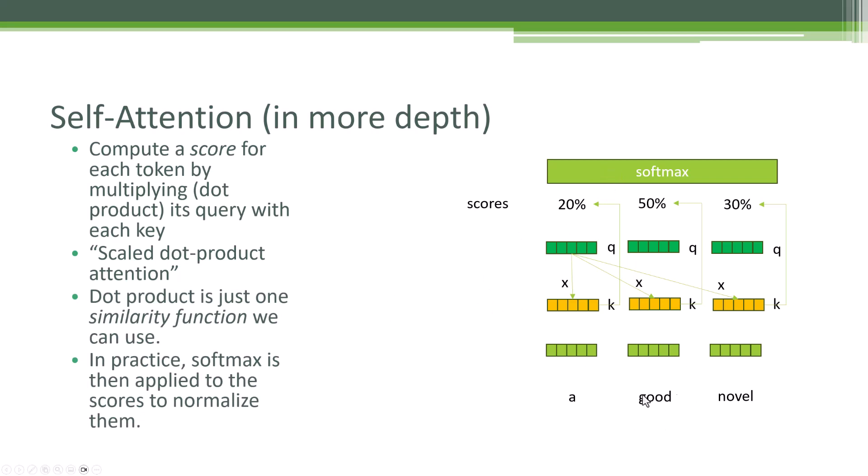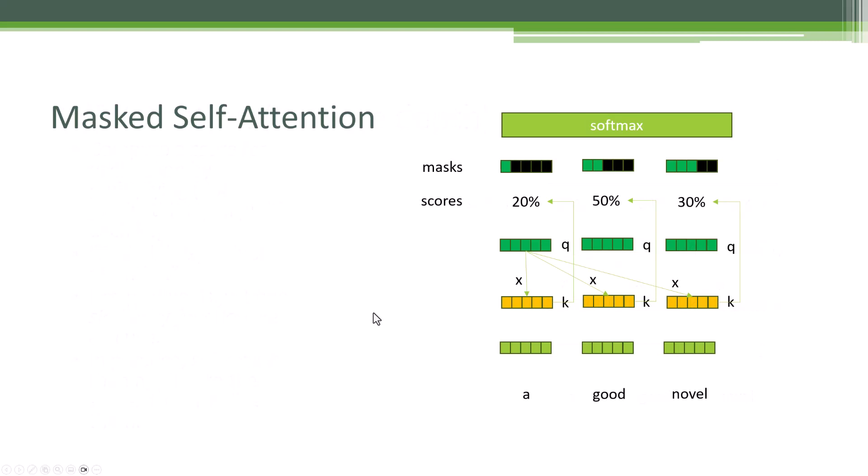So to walk it through again, for every token, let's start with the first one, A. We're going to take its query vector. We're going to multiply that by the key vector. And that gives us a score. We do that for every other token. We take that query, multiply it by the key for good. That gives us a score for good. Take that query, multiply it by the key for novel. That gives us a score for novel. And then we apply softmax just to normalize it all. And now we have our scores for self-attention. You can see this is pretty efficient.